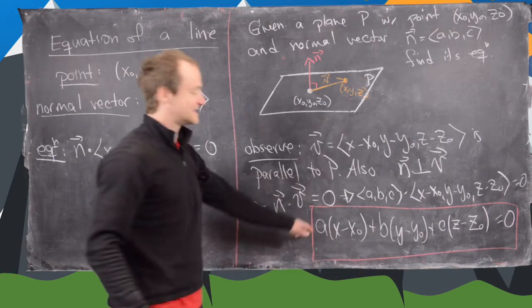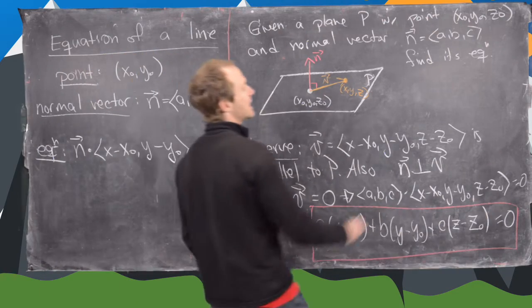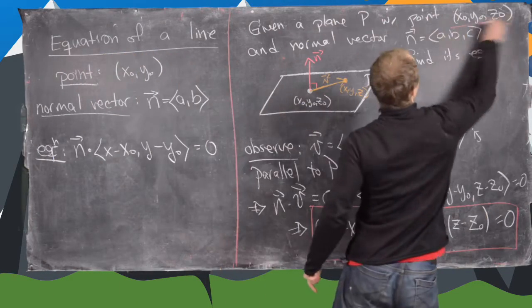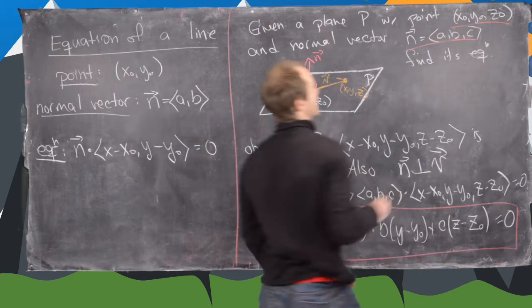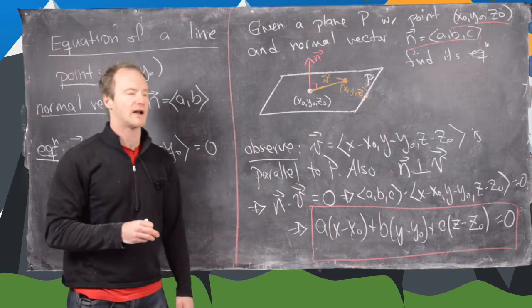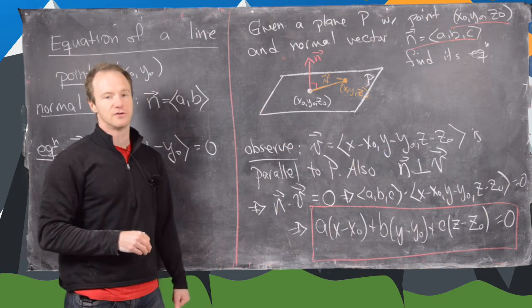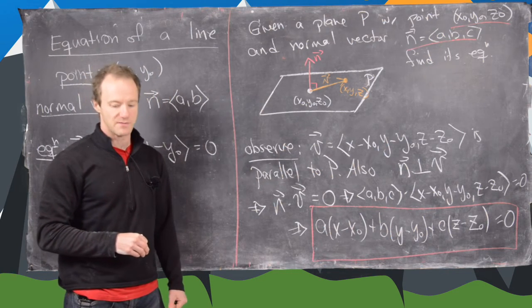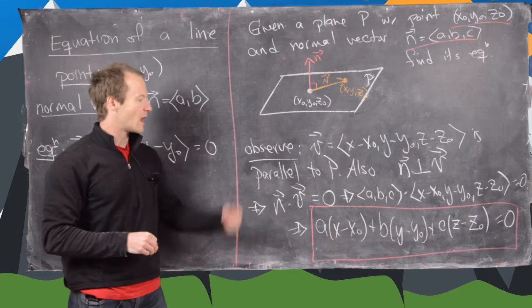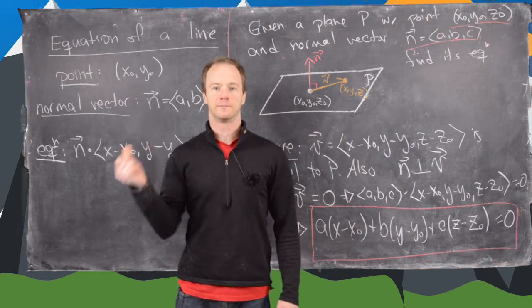And that is the equation of the plane given this data. It contains the point x-naught, y-naught, z-naught and has normal vector a, b, c. I'll clean up the board and then we'll look at an example.